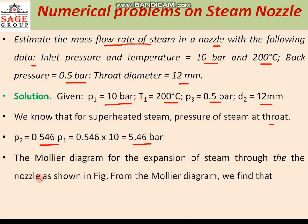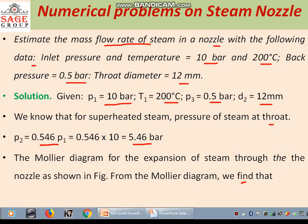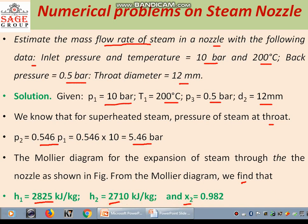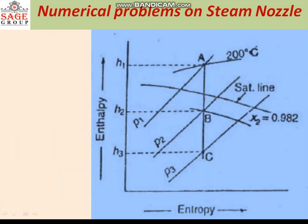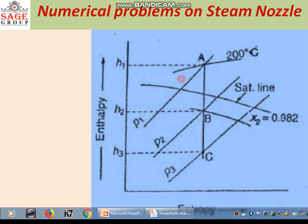From the Mollier diagram for the expansion of steam through the nozzle, we find H1 equal to 2825 kJ per kg, H2 equal to 2710 kJ per kg, and the dryness fraction x2 equal to 0.982. Corresponding to the initial pressure P1 of 10 bar and 200 degree centigrade, expansion starts from this point; for isentropic expansion it is a vertical line down to pressure P3 of 0.5 bar. The constant entropy line meets P2 (critical pressure at throat) at a point where the dryness fraction x2 equals 0.982.